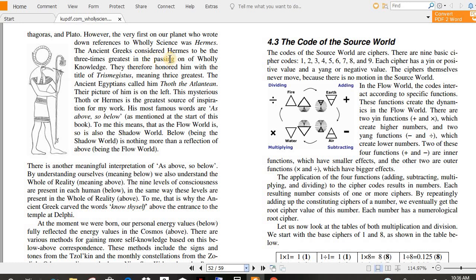The ancient Greeks considered Hermes, or Thoth, to be the three times greatest in the passing on of holy knowledge. They therefore honored him with the title of Trismegistus, meaning thrice greatest.